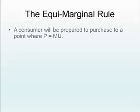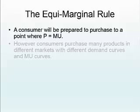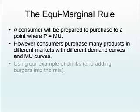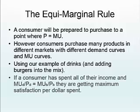The equi-marginal rule says that a consumer purchases to a point where price equals marginal utility, but there's a problem — there's more than one product in the marketplace. Consumers purchase a range of products with different demand curves and MU curves. Using our example of drinks and burgers, consumers will tend to spend to a point where the marginal utility for drinks divided by the price — the marginal utility per dollar spent — is equal to the marginal utility per dollar spent for burgers.